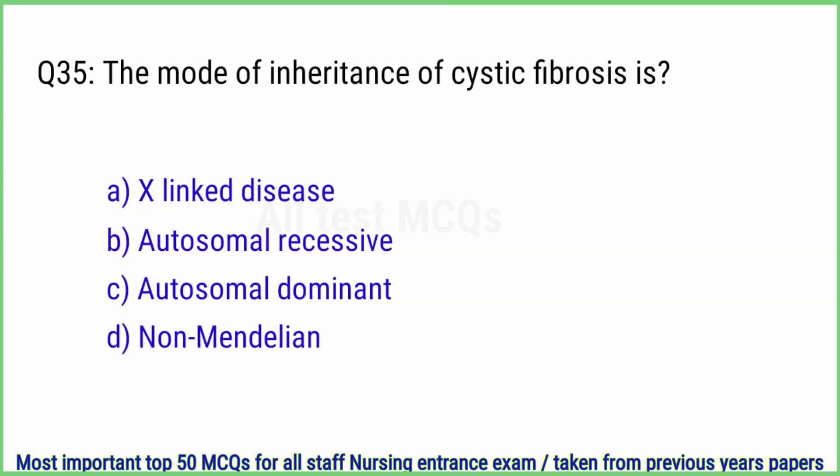Q35. The mode of inheritance of cystic fibrosis is? The right answer is option B, autosomal recessive.